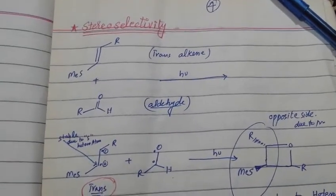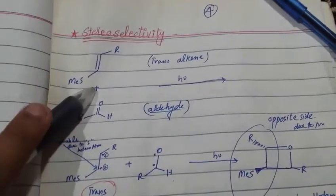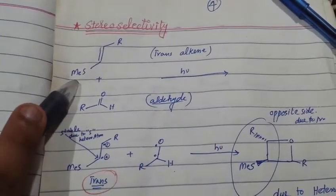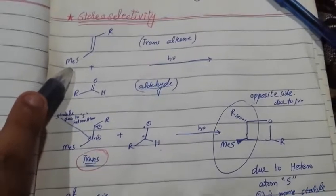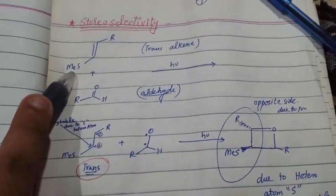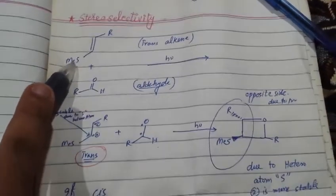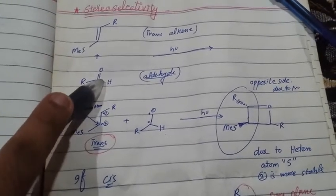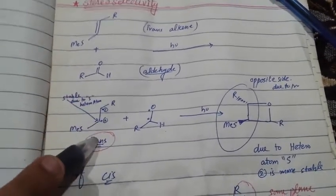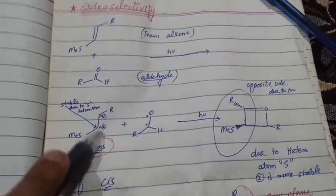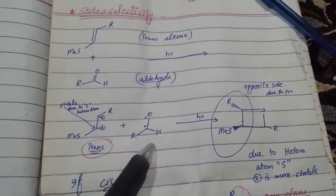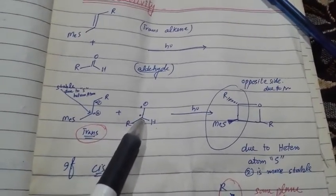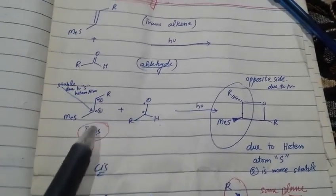Now we are going to look at stereoselectivity. We have a compound in the trans configuration and a compound where substituents are together. Here there is a heteroatom — sulfur — that holds them together. We react this with an aldehyde, forming radicals. We number them: radical 1 and radical 2. The oxygen-adjacent radical is unstable, and the carbon radical is also unstable.